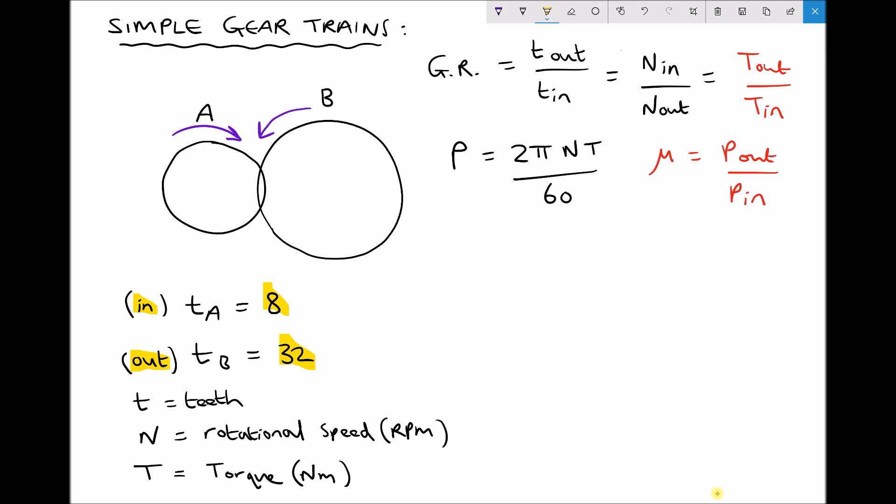Some of the other symbols we're using here: capital N represents rotational speed, and our rotational speeds are given in revolutions per minute, and we also have capital T for torque which is given in newton meters.